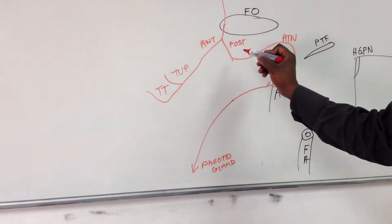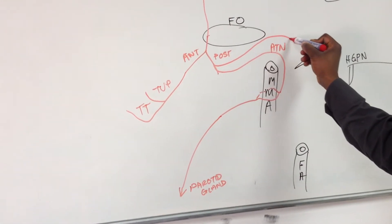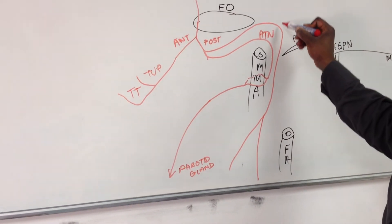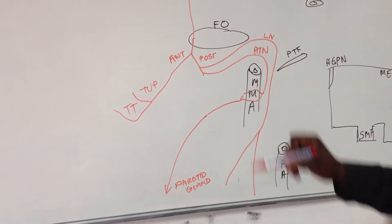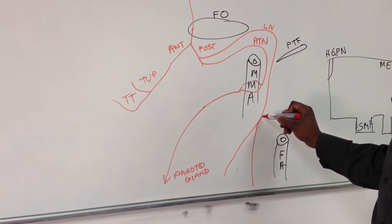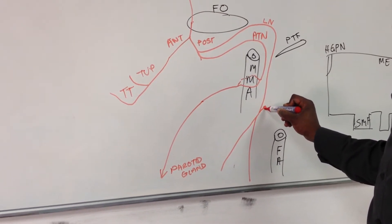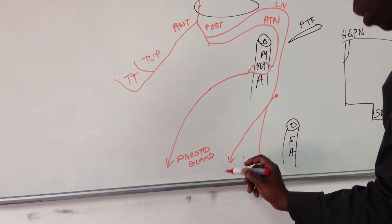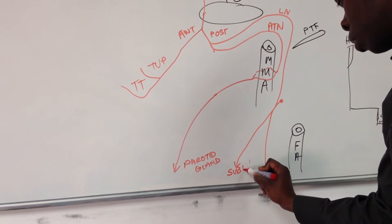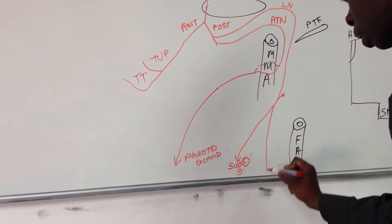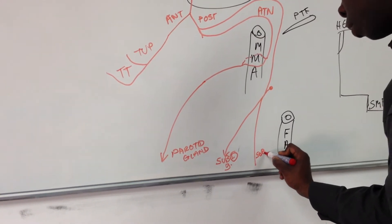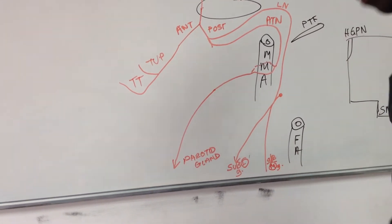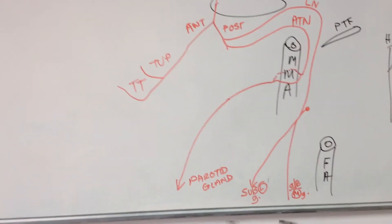The other nerve which also comes off the posterior division is the lingual nerve, which comes around and is going to pick up a little contribution which we'll explain shortly. That's going to split — part of it is going to go to your sublingual gland and the other part is going to go to your submandibular gland.